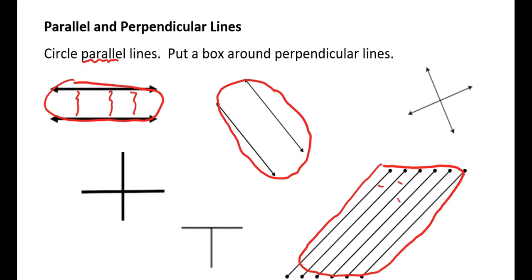Now, perpendicular lines are lines that create 90 degree angles when they cross each other, or where they intersect. So you can see in this example, these two lines intersect and actually make four 90 degree angles. So we'll put a box around that one.